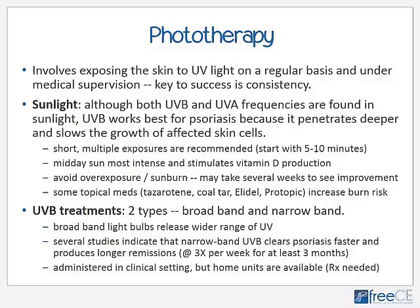Artificial UVB treatments are popular and come in two general types: broadband and narrowband. Broadband light bulbs release a wider range of UV, while several studies indicate that narrowband UVB clears psoriasis faster and produces longer remissions. Treatment frequency is about three times per week for at least three months to get good results. These UVB treatments are usually administered in a clinical setting, though home units are available with a doctor's prescription.